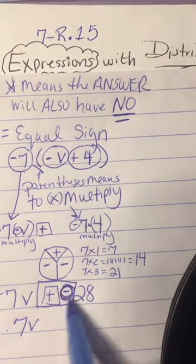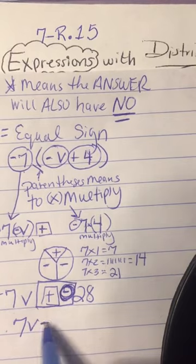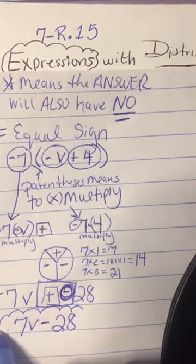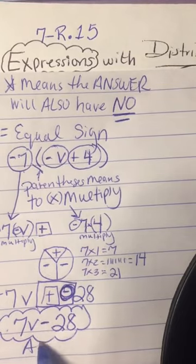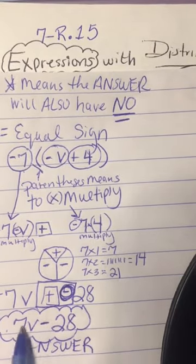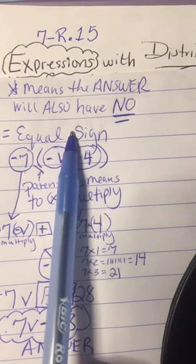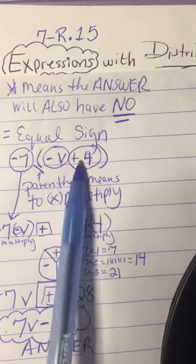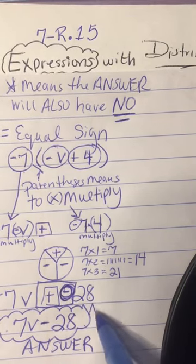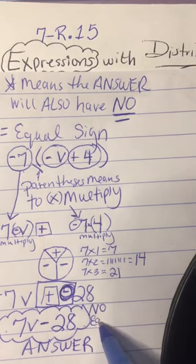We're going to take the sign that's closest to 28. So 7V minus 28 is going to be the answer. Remember, do not place an equal sign because when we started the problem out, there was no equal sign. So the answer also has no equal sign.